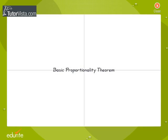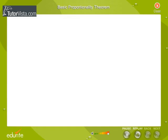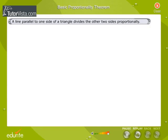Basic Proportionality Theorem. The theorem states that a line parallel to one side of a triangle divides the other two sides proportionally.